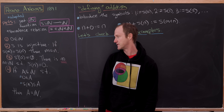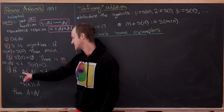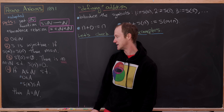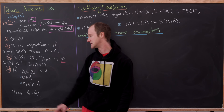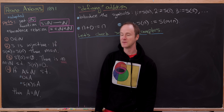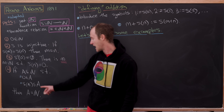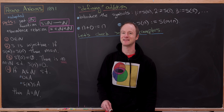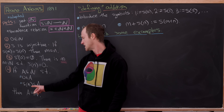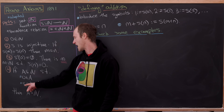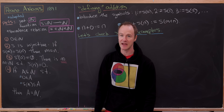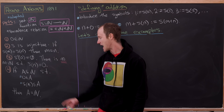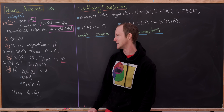The fourth axiom is the inductive property. If we've got a subset A of N that satisfies two conditions — A contains the zero element, and A is closed under applying the successor function (i.e., the image of A under S is contained in A) — then A is the whole set N.